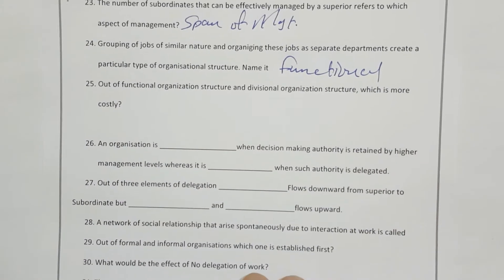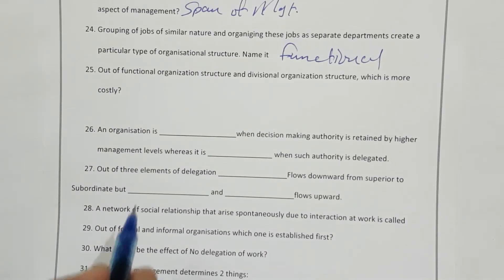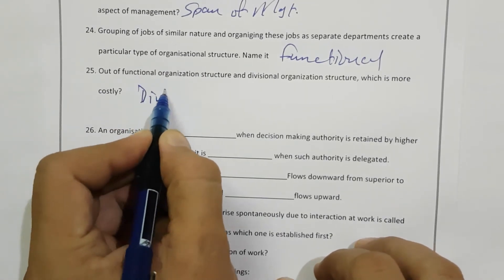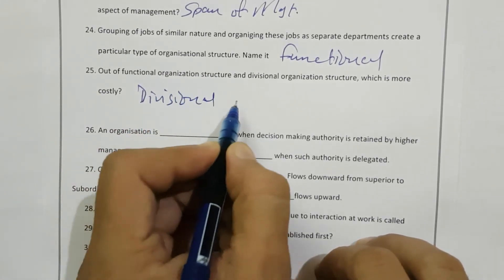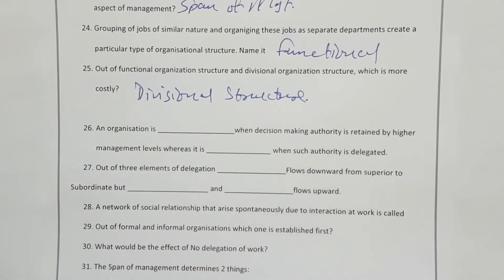Out of functional organizational structure and divisional structure, which is more costly? Obviously the divisional structure is more costly, because in divisional structure there will be separate departments — financial, purchase, production — everything is separated for each product. So it is obviously more costly.